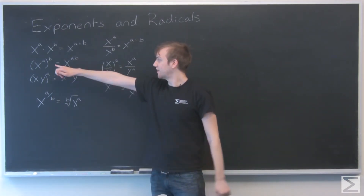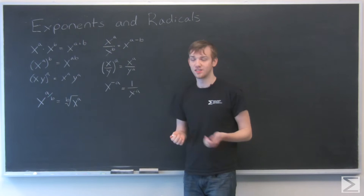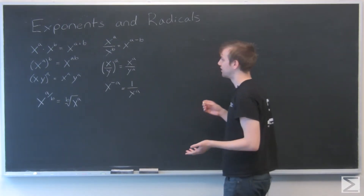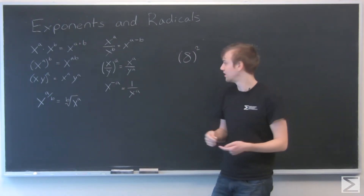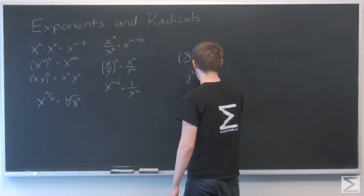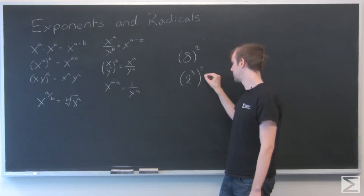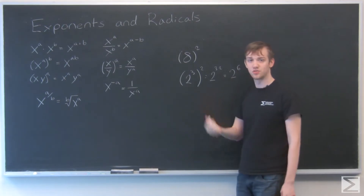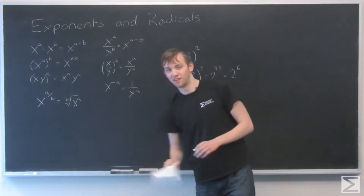Our next rule: x to the a, in parentheses with a b outside, is the same as x to the ab. This rule is useful for simplifying numbers, making larger numbers into smaller ones. For example, 8 squared — since 8 is 2 cubed, we can replace it and get 2 cubed squared. Applying the rule gives us 2 to the 3 times 2, which is 2 to the sixth. That's a simpler, lower-base form, especially when you need the same base to apply other rules.